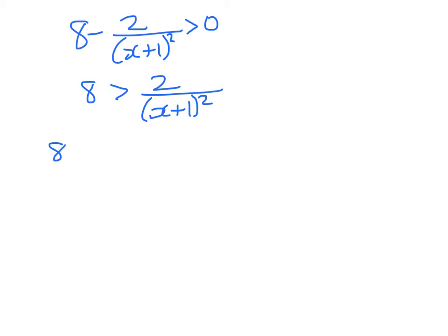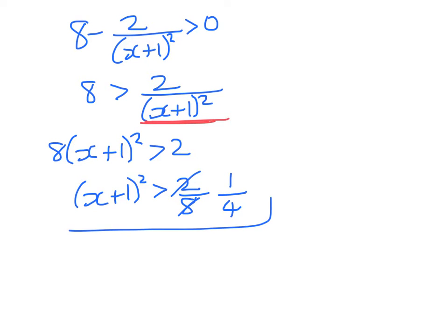So 8 - 2/(x + 1)² > 0. 8 > 2/(x + 1)². Cross-multiplying. I get this. Now it's OK to do that, because the denominator is always positive. Now I'm going to divide both sides through by 8. So I get this. (x + 1)² > 1/4.